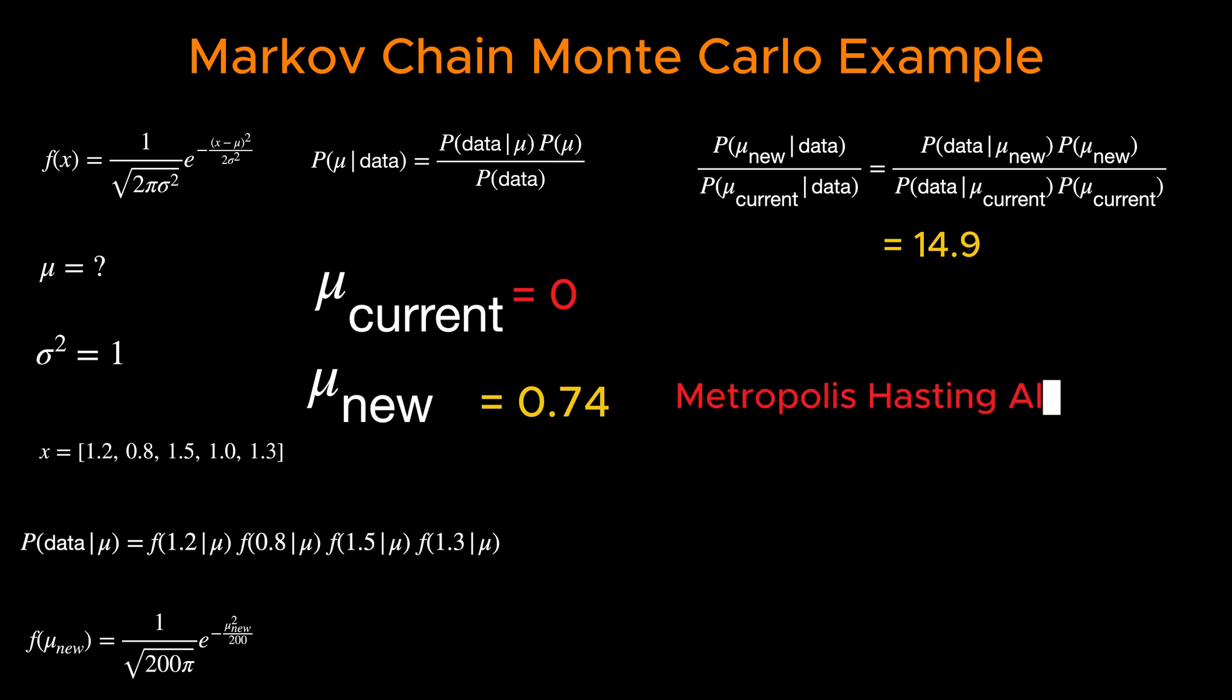A common choice comes from the Metropolis-Hastings algorithm. In this algorithm, if the probability of new μ is larger than the probability of current μ, we keep the new μ in our container.